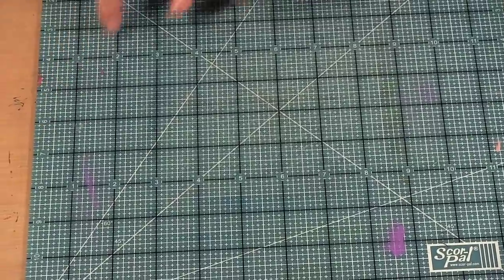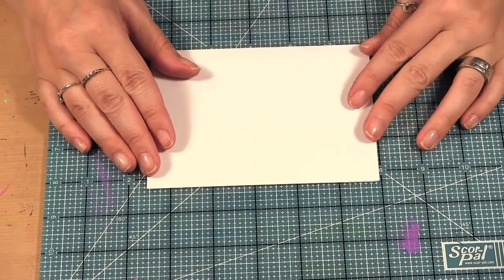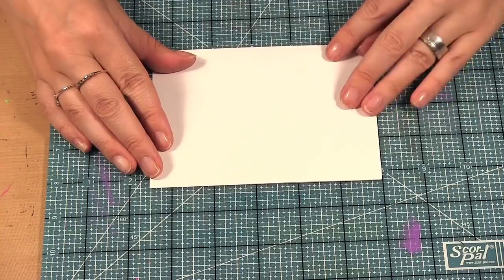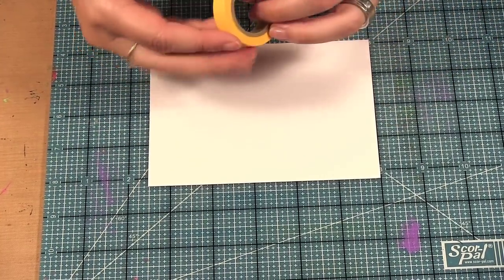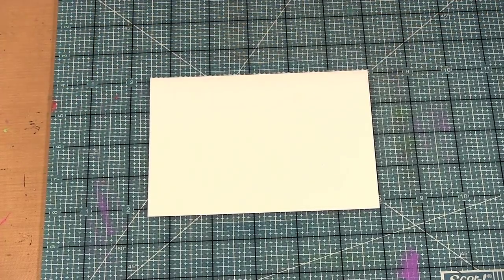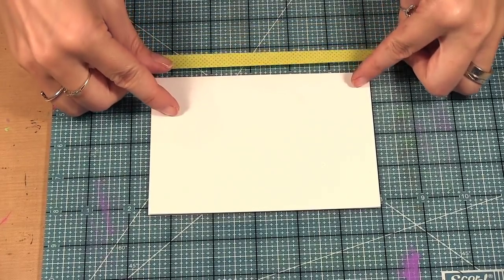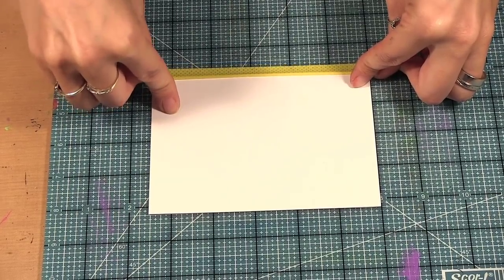So I used a mat that had all the measurements on it and then I put my card down. And this is how I got my masking. So I used washi tape that's about three-eighths of an inch in width. And I know that I need an eighth at the top.